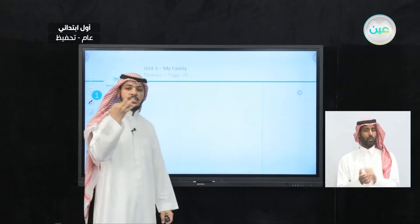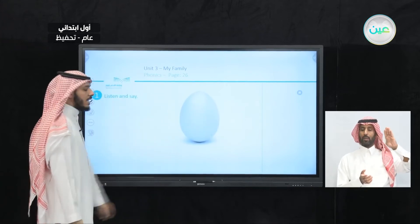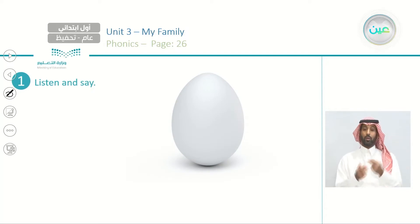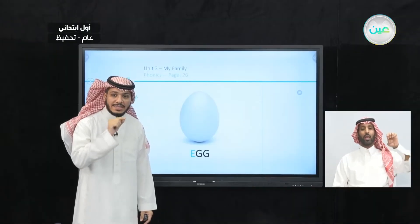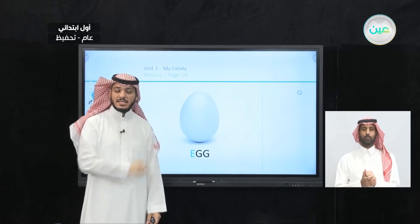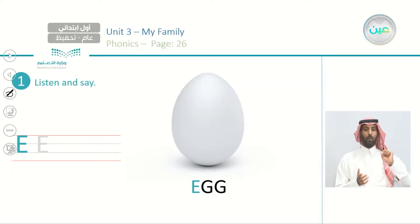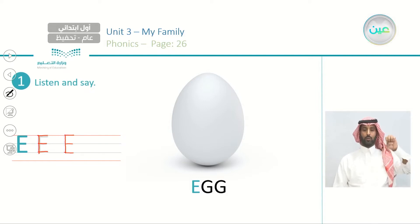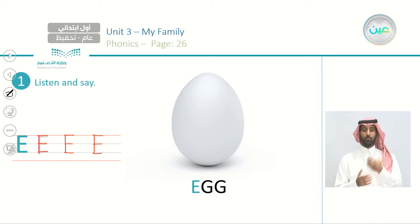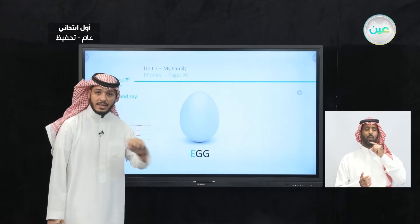A, B, C, D, E. Excellent. Can you tell me what is this? This is an egg. Excellent. We have egg here, it starts with E. We pronounce it as egg. How to write the letter E? We have one long line, and three small lines on the right side. This is E, and we pronounce it in the word as egg.